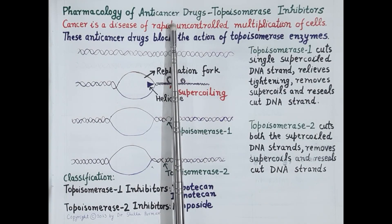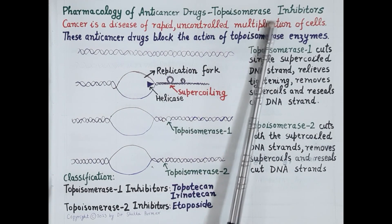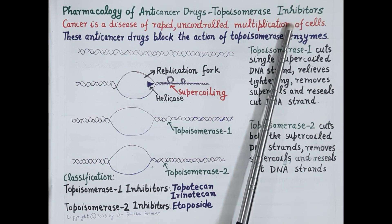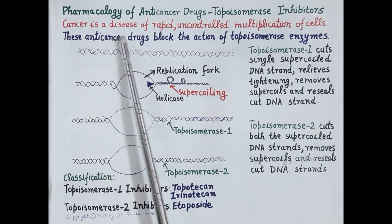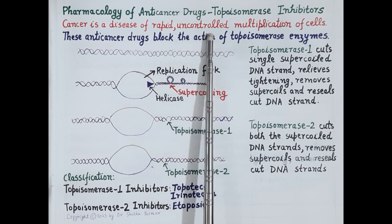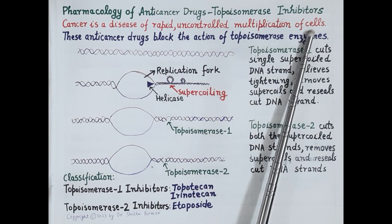Hello students. In today's video we are going to study pharmacology of another class of anti-cancer drugs: topoisomerase inhibitors. As we all know, cell division is a highly regulated and controlled process, and cancer arises due to rapid, abnormal, uncontrolled multiplication of cells.